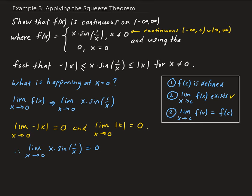So the limit of our function as x approaches zero exists. Now we evaluate the function at zero: since at x equals zero we get the value zero, the function at zero is defined. Looking at the third condition, the limit of x times sine(1/x) as x approaches zero equals the function evaluated at zero. This tells us that the function is continuous at zero.